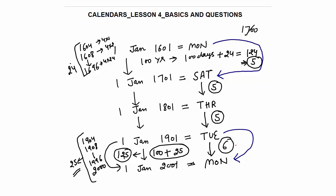Why? Because year 2000 is a century leap year. So to summarize: a 100-year gap without a century leap year always gives 5 odd days, whereas a 100-year gap with a century leap year — that is year 2000 — will give 6 odd days.